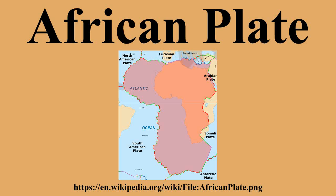The African Plate is a major tectonic plate straddling the equator as well as the prime meridian. It includes much of the continent of Africa as well as oceanic crust which lies between the continent and various surrounding ocean ridges. Between 60 million years ago and 10 million years ago, the Somali Plate began rifting from the African Plate along the East African Rift. Some literature refers to the African Plate as the Nubian Plate to distinguish it from the continent as a whole.